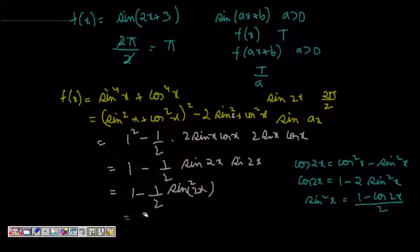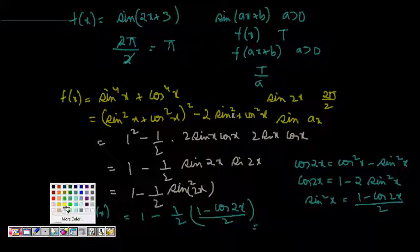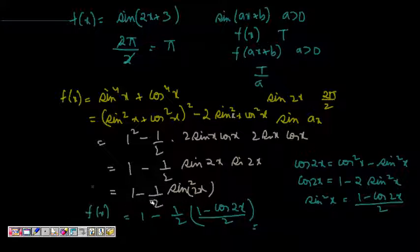So we can replace it here, so this is equal to 1 minus half and 1 minus cos of 2x by 2. So this is now fx is this, so we can write this as 1 minus 1 by 4, 1 minus cos of 2x.